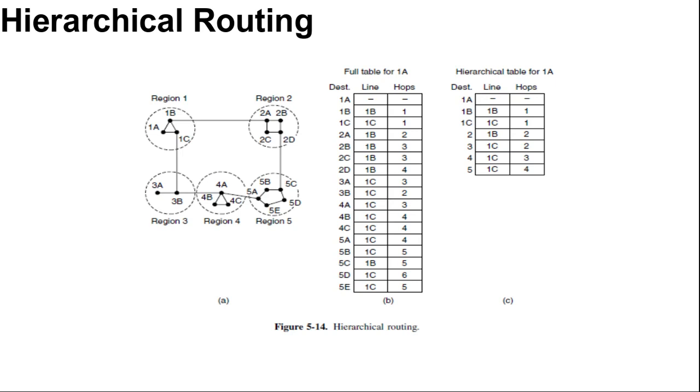As you can see here in the hierarchical routing diagram for region 1, region 2, region 3, region 4, region 5, there is a full table for 1A and hierarchical table for 1A. You can compare the numbers of routing entries in the two-level hierarchy with 5 regions.